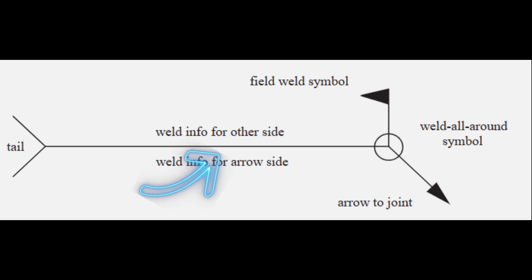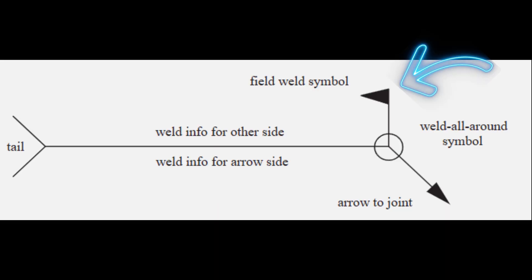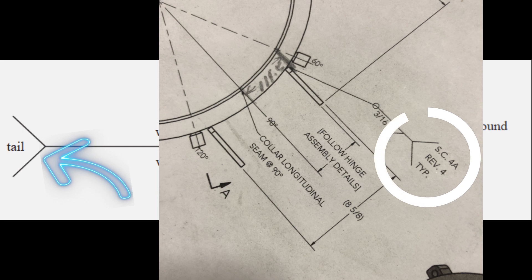Horizontal line is called a reference line. Weld information is shown on this line. Arrow point doesn't mean to weld the part where the arrow is pointing. The arrow is just pointing to the joint. The joint that arrow is pointing to is called arrow side, and the opposite is called the other side. Triangle flag is field weld symbol. If you work in a shop and see this symbol, you should not weld. It will be welded on the field. Circle means you weld all around. Tail shows additional information is added.